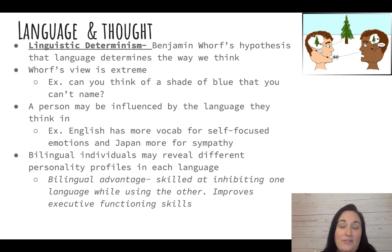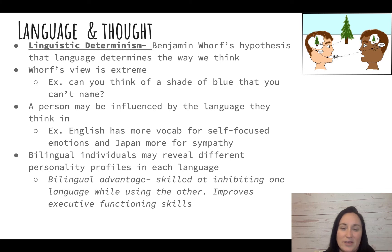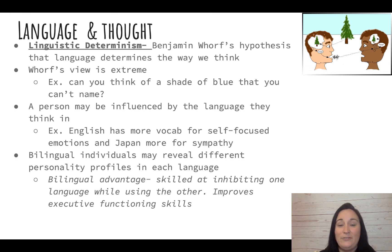Language also affects how we think. A really extreme view on this is Benjamin Whorf's hypothesis called linguistic determinism — the idea that language determines the way we think. The idea is that we are restricted; we can't think outside of or beyond our language. But a lot of people have problems with this. For example, can you think of a shade of blue that you can't give a name to? Most likely you can — so we can think of things outside of what we can label or identify.